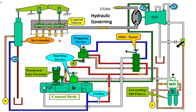Let us see the complete details of the hydraulic governing system. This is the emergency stop valve and steam comes from here, comes to the steam chest. In this case there are five valves. Each valve has got a different spindle length and is operated by this beam. This spindle moving up or down is controlled by the servo motor, which we will be seeing in the next slide.